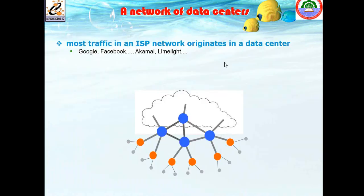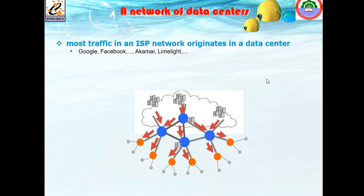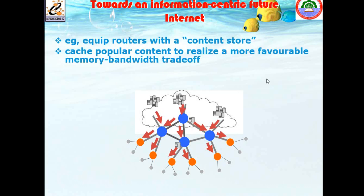In a network of data centers, most traffic in an internet service provider network originates in a data center — like Google, Facebook, and Limelight. These various data centers are interconnected and we access data from the outside world through them.